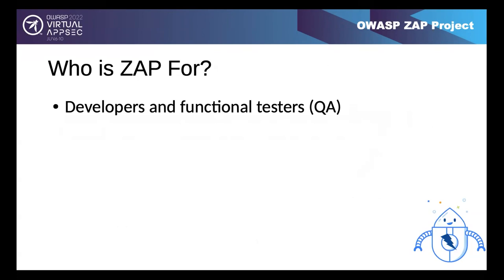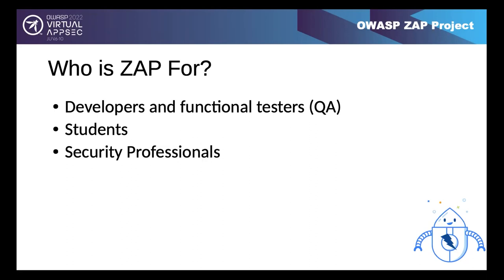When Simon released ZAP back in 2010, he originally aimed it at developers and functional testers, feeling he didn't have the authority as a developer to claim it was ready for security professionals. But students make a lot of use of ZAP too - all the source code is available so you can see exactly how it works. Eventually so many security professionals complained that ZAP was for them too that Simon had to change the tagline. ZAP is now used by a wide range of people from those just starting their security journey to very experienced professionals.